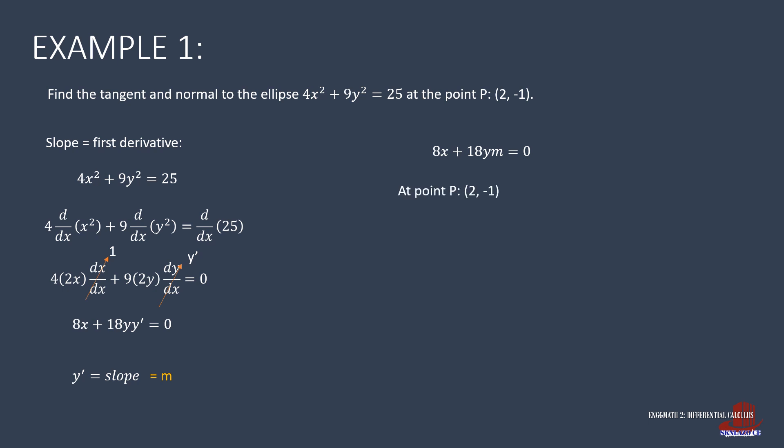To find the value of m, we use the coordinates (2, -1) to get 16 - 18m = 0. Transposing one term and simplifying gives m = 16/18, which reduces to 8/9.